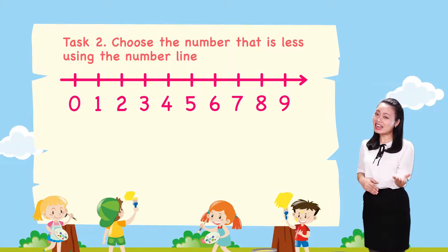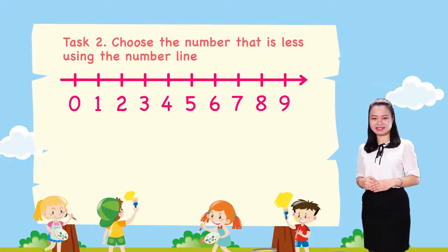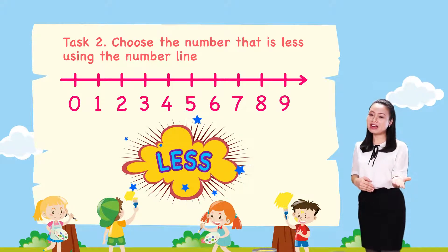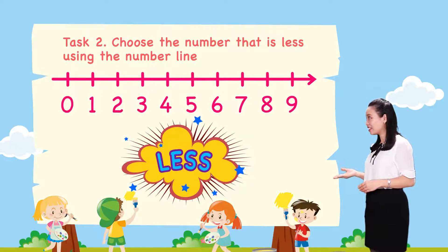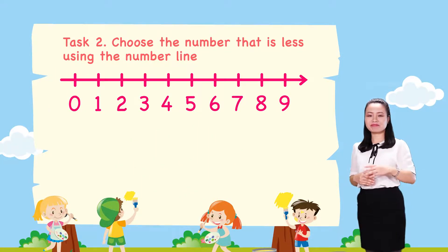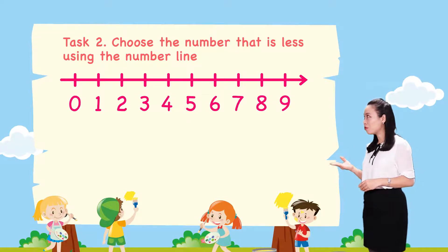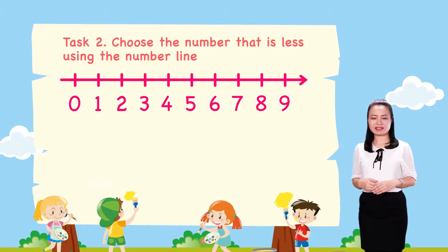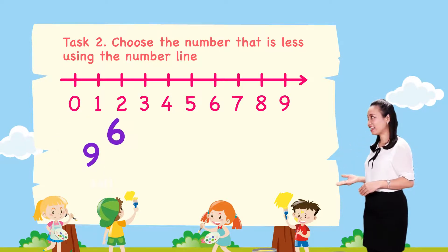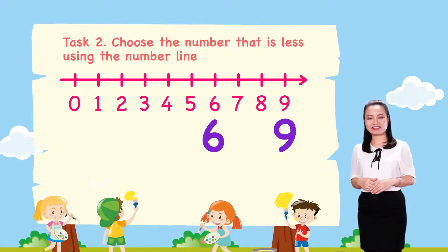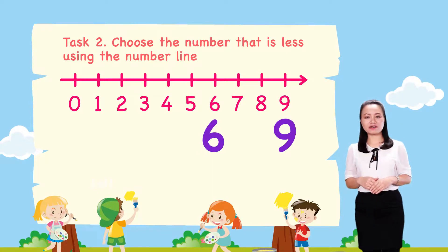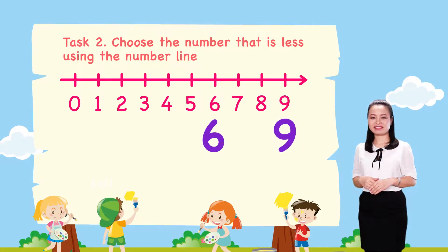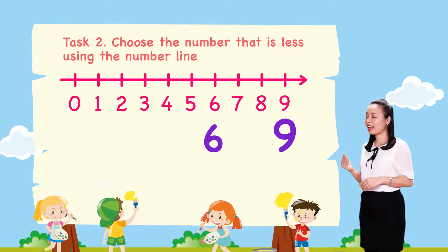Now, let's find the answers together. To choose the number that is less, first look at the number line, then decide which number is to the left of the other. For the pair 6 and 9, number 6 is to the left of number 9. So 6 is less.